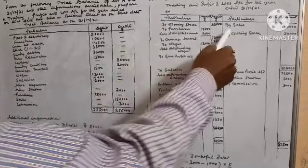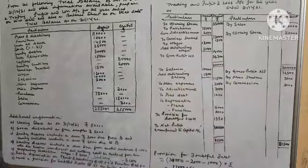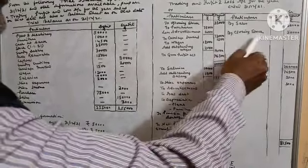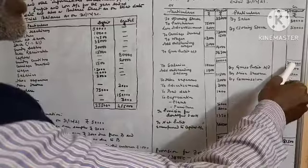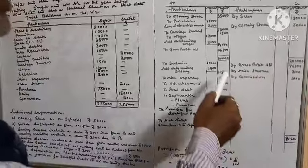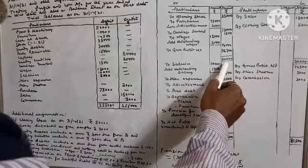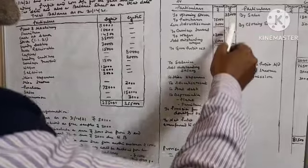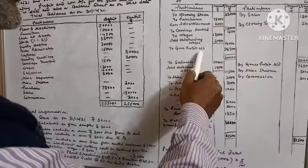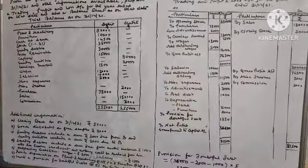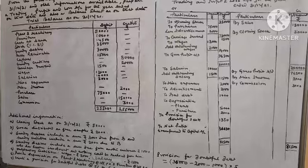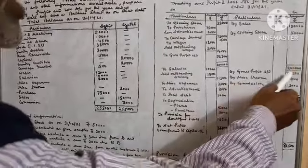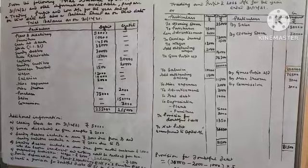Credit side: By sales 1,50,000. By closing stock given in additional information 50,000. Total credit side 2,00,000. Debit side total also 2,00,000. After deducting the remaining balances, gross profit carried forward will be 76,500. That gross profit is transferred as by gross profit brought down 76,500.